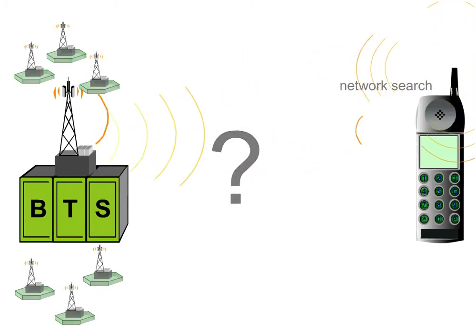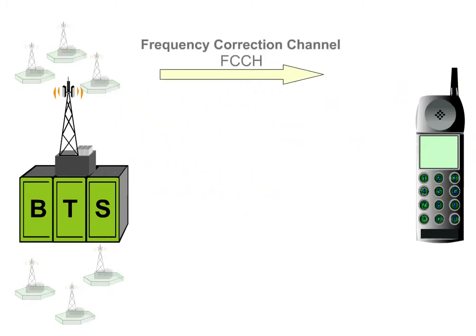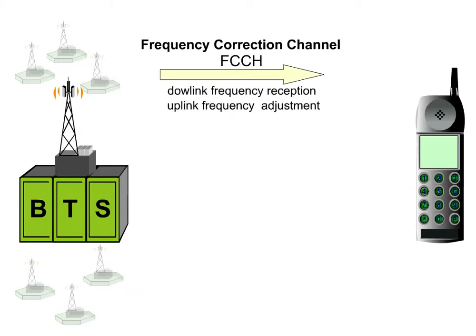For this purpose, the BTS sends out the frequency correction channel at short, regular intervals to help the mobile station find a frequency for downlink reception and adjust its frequency oscillator for the uplink transmission. To do so, it picks out the strongest received signal.